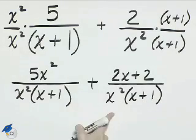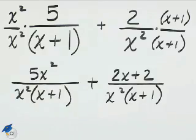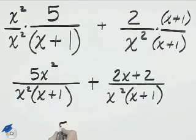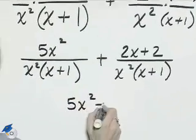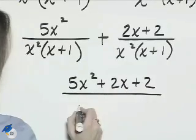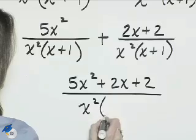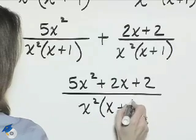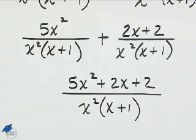We'll keep this denominator and combine any like terms in the numerator. This will be 5x squared plus 2x plus 2, and that's over x squared times the quantity x plus 1. The numerator cannot be factored, so we're done with the problem.